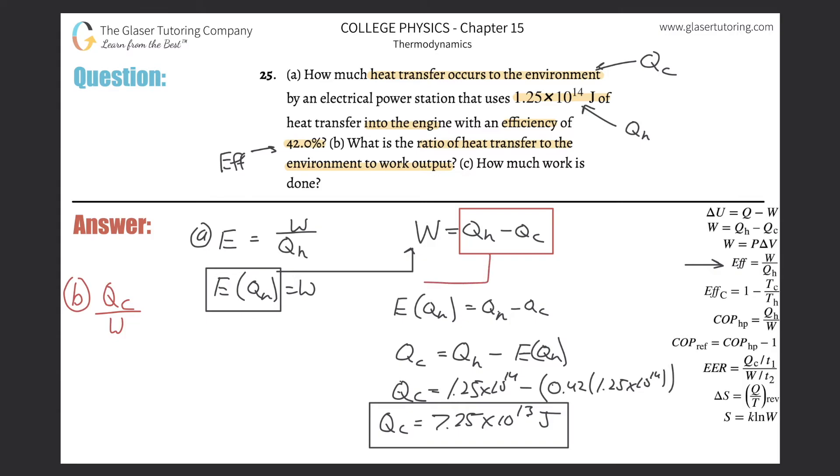Now I know all the variables: Q sub c divided by Q sub h minus Q sub c. That's simply going to be 7.25 times 10 to the 13th divided by 1.25 times 10 to the 14th minus 7.25 times 10 to the 13th. We get that value divided by 1.25 times 10 to the 14th minus that value of 7.25 times 10 to the 13th, and we get about 1.38 to 1.